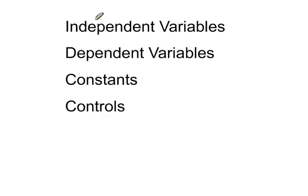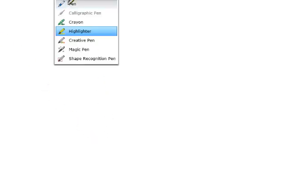Alright, we're going to talk today about the difference between independent variables, dependent variables, constants, and controls. Something that students often have a difficult time with. So to do this, we're going to set up an experiment that you might find occurring in your own neighborhood.